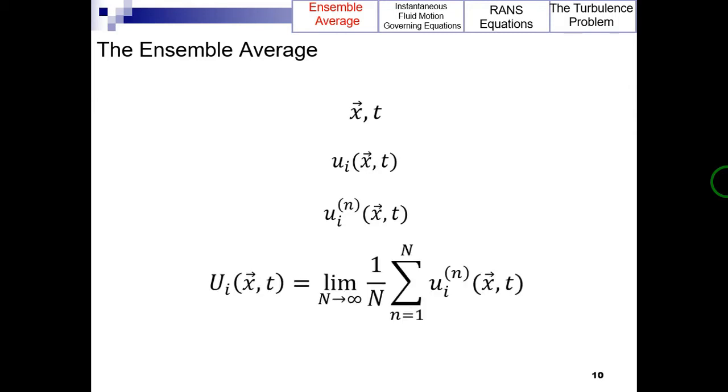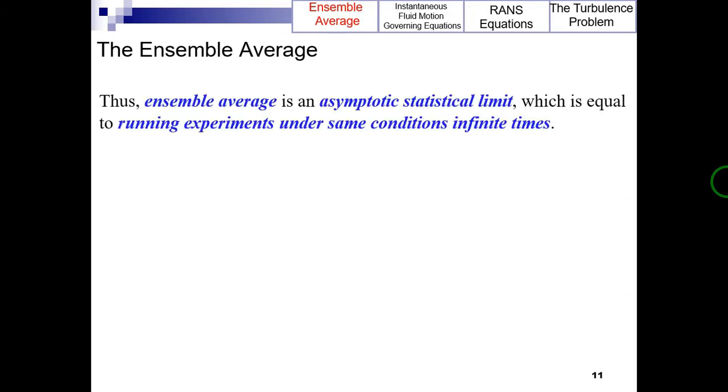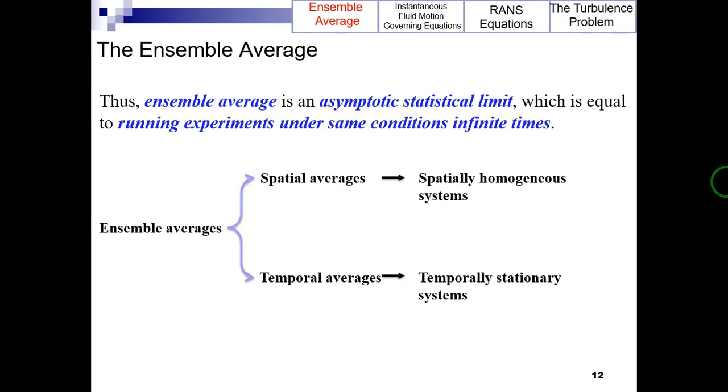Note that this ensemble average, uppercase u underscore i, will in general vary with the independent variables x and t. Thus, the ensemble average is an asymptotic statistical limit which is equal to running experiments under same conditions infinite times. In practice, we often approximate ensemble averages by spatial or temporal averages in spatially homogeneous directions or temporally stationary systems, respectively.